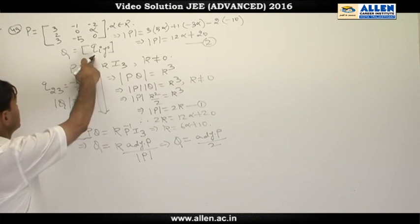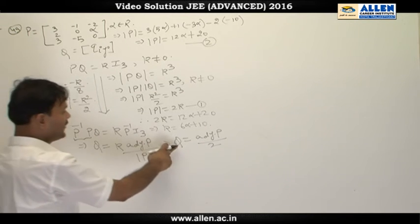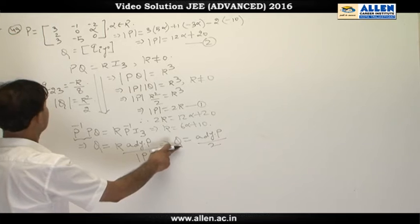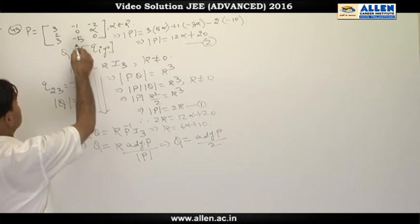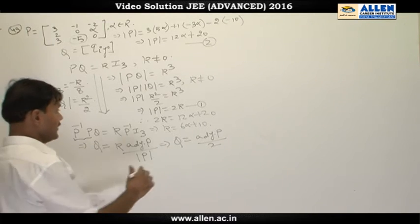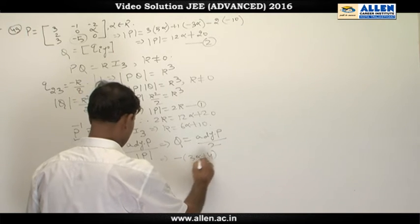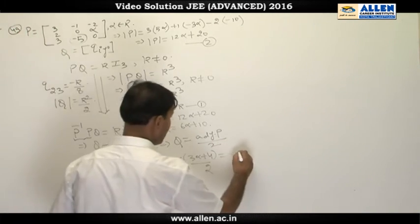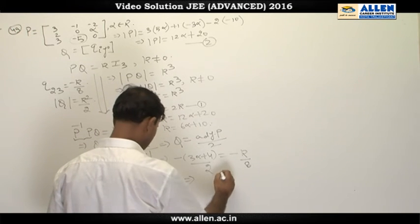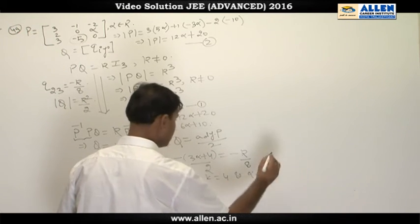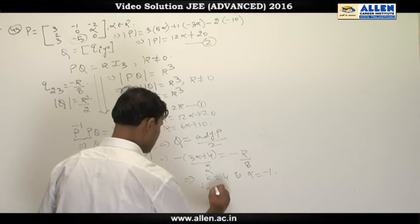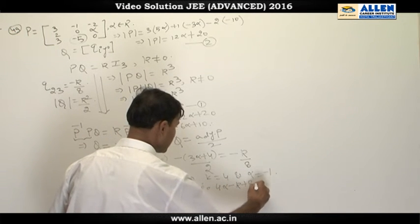Computing element q₂₃ from the adjoint of P gives minus(3α + 4) divided by 2, which we are told equals −k/8. Using this equation along with k = 6α + 10, we solve to find k = 4 and α = −1. We verify that option B, which states 4α − k + 8 = 0, is satisfied and is correct.